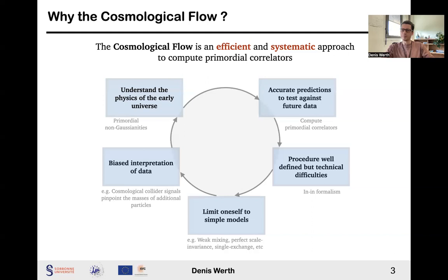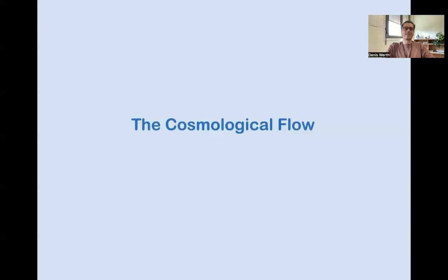Mostly limited by our computational abilities to compute primordial correlators, a common procedure is then to limit oneself to simple models where analytical calculations are tractable. As a result, most of the theoretical predictions are available only in restricted classes of theories, which can lead to a biased interpretation of the data. One example is the commonly acknowledged fact that measuring the so-called cosmological collider signal pinpoints the masses of additional particles during inflation. And as we will see, it is more subtle and not that simple. Breaking the vicious circle, the cosmological flow is a complete method to systematically compute tree-level inflationary correlators, shifting our focus from technical considerations to an unbiased exploration of inflationary signatures.